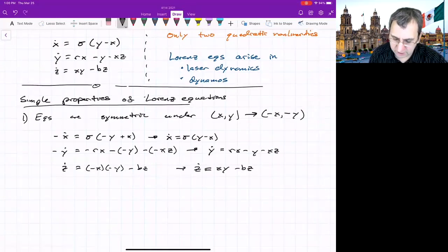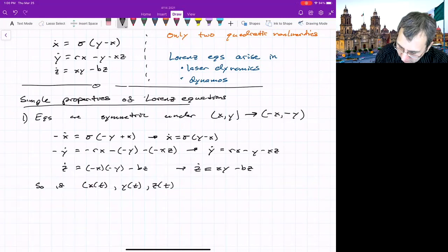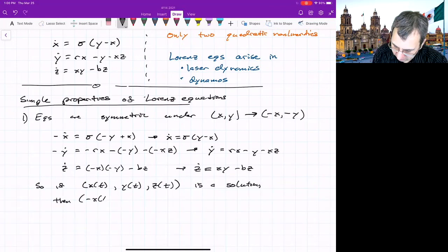What does this mean? Any time you have equations that are symmetric like this, it means if x, y, and z as a function of time, if that is a solution, then negative x, negative y, and z is also a solution.